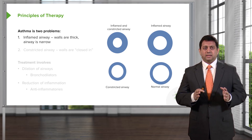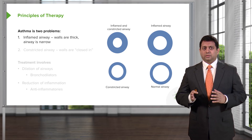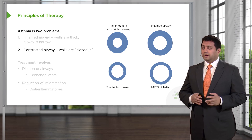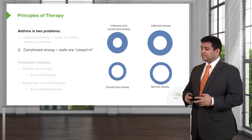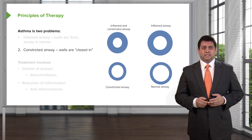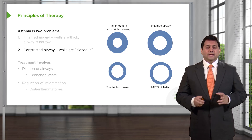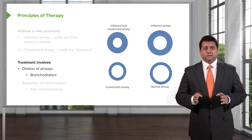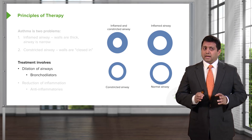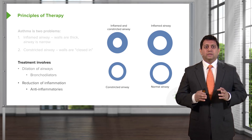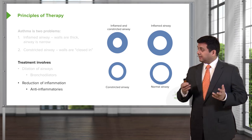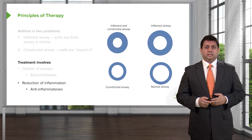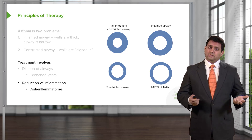So with an inflamed airway, the walls are thick and the airway is narrow. With a constricted airway, the walls are closed in and the airway is narrow. Treatment involves two types of therapy: you can bronchodilate, or you can give anti-inflammatories to reduce thickness. Or you can do both.